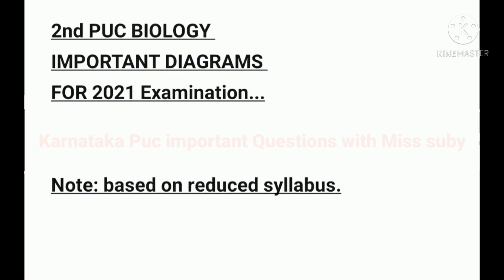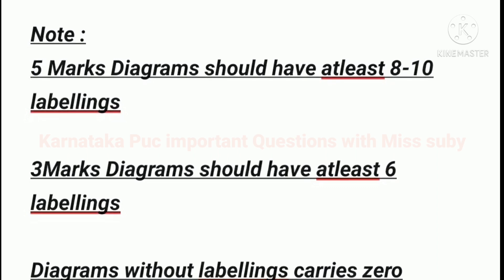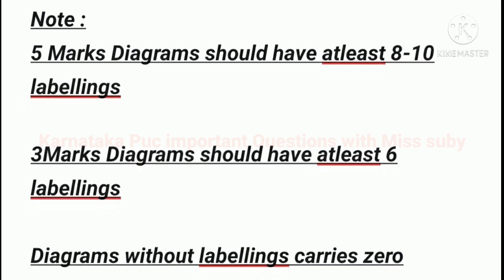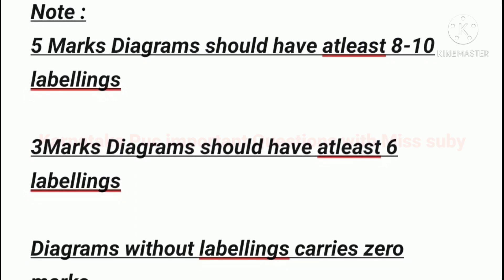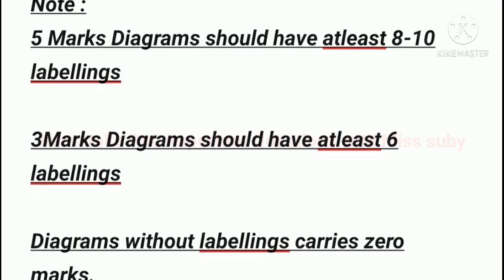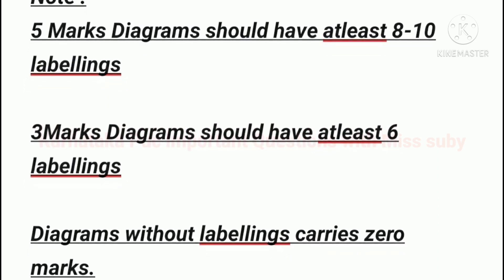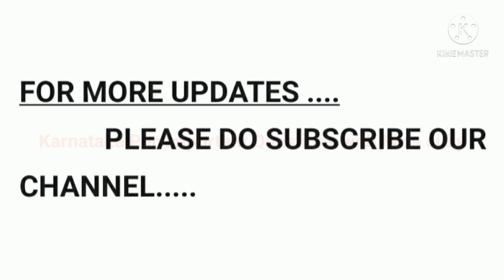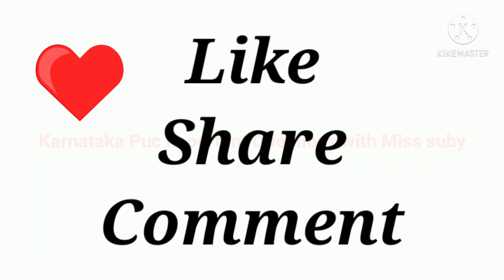So friends, these were the second PUC biology important diagrams from the reduced syllabus. Go and practice all the diagrams perfectly. Don't forget the labellings — diagrams without labellings carry zero marks. For 5-mark diagrams, label at least 8 to 10 names; for 3-mark diagrams, at least 6 labellings. For more updates, please subscribe to the channel, and don't forget to like, comment, and share. Thank you for watching.